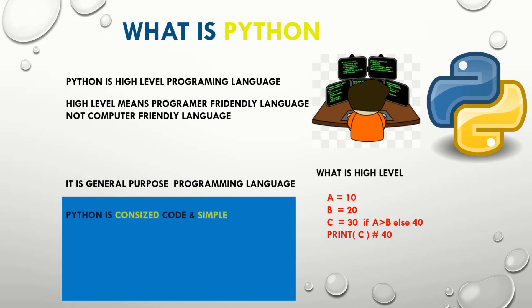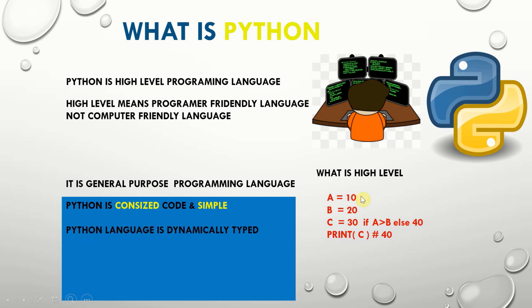Python is a general-purpose programming language. Python is concise code and simple — the code is very short and simple, that is why Python is concise. Python language is also dynamically typed, and by default it can adjust garbage collectors and many other things we will discuss in later sessions.